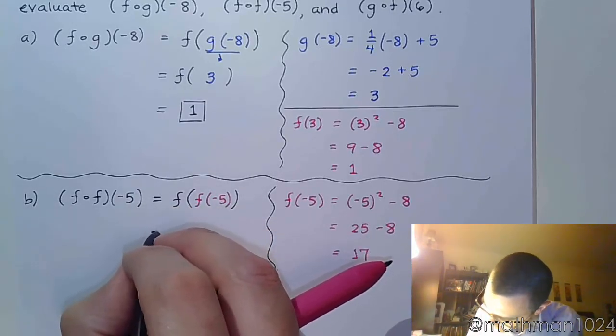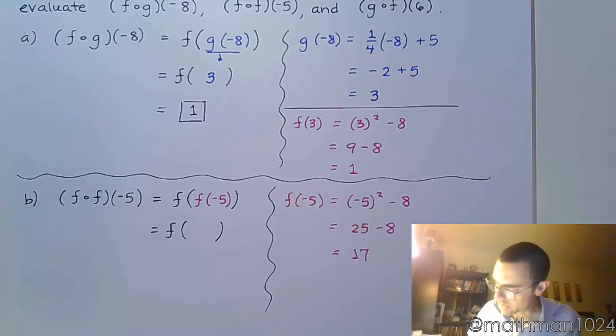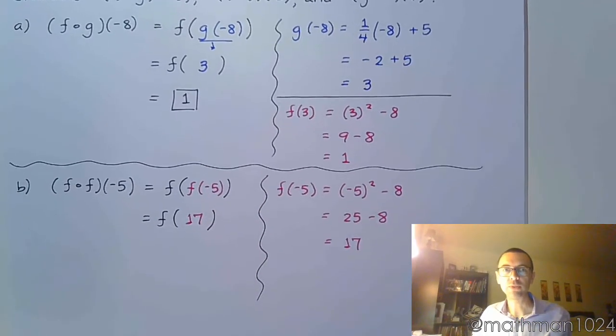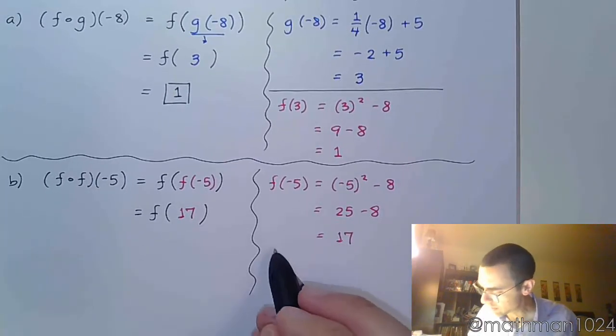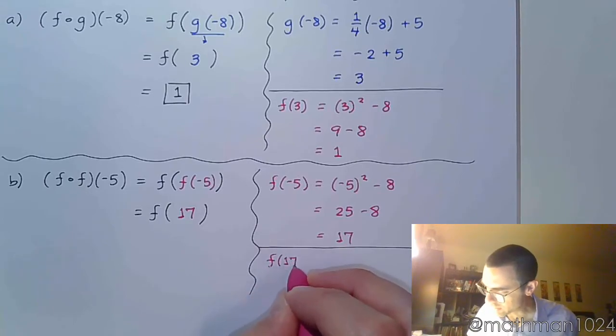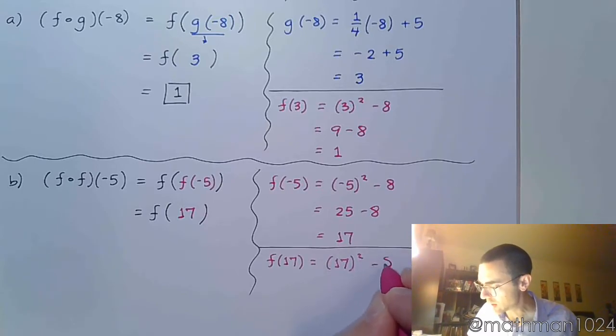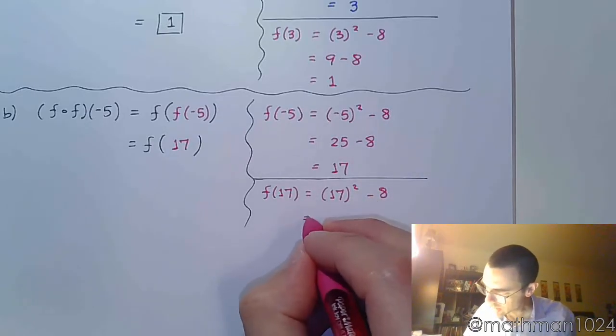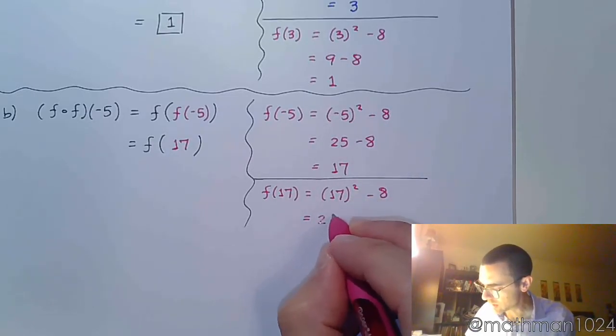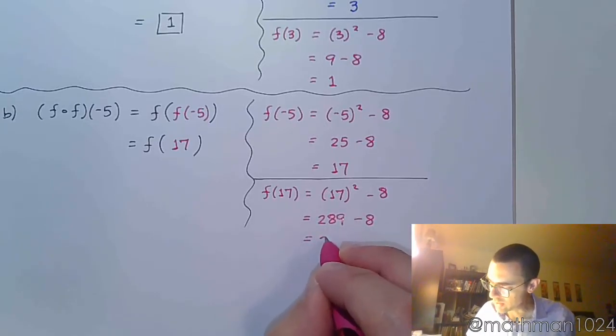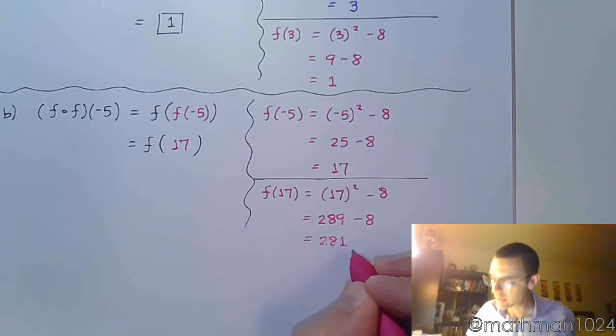So now we have f of 17. Okay, well, now we need to figure out that off to the side. I guess I'm still using pink for this. So f of 17 equals 17 squared minus 8, because you're still plugging it back into f. So 17 squared is 289 minus 8 is 281.